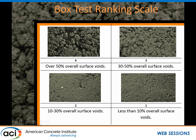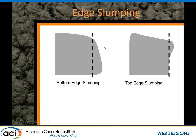We go around and say how many voids do I have? This is obviously not good, this is better, this is where we'd be okay with, and this would be awesome. We're okay with a visual ranking of 2 or 3 in our box test. If we get a 3 or 4, we're not happy — we would say it failed. We also look at edge slumping using a straight edge. If it edge slumps more than a quarter of an inch, that's failure.